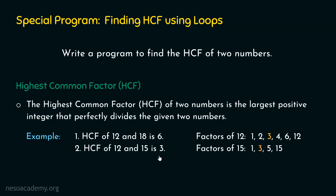In this way, we can find the HCF of two numbers. We just need to list down all the factors, then find the common factors, and eventually this will lead us to the highest common factor. Now we are ready to write the program to find the HCF of two numbers. As we know the logic, we can write the program now.